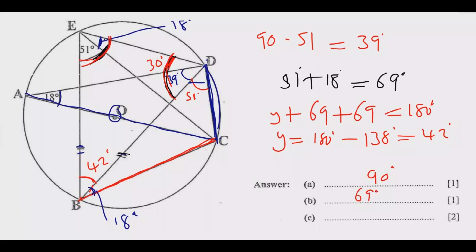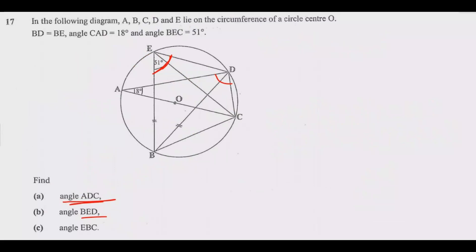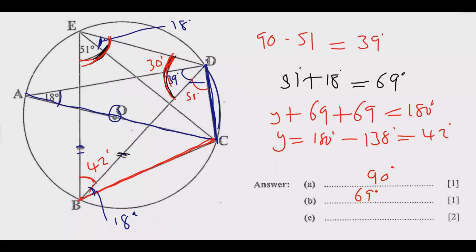Remember we added 51 and 18. Lastly, angle EBC. It's 42 plus 18 degrees, so that's 60 degrees.